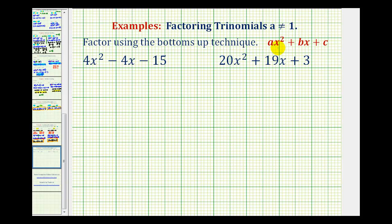In this video we'll take a look at factoring trinomials in the form ax squared plus bx plus c when a is not equal to one and a is not a common factor. We'll use the method called bottoms up.